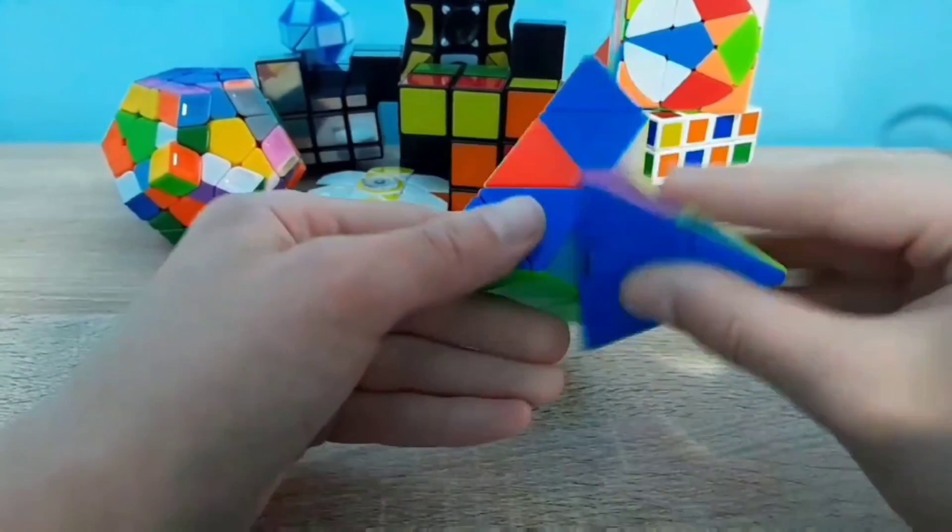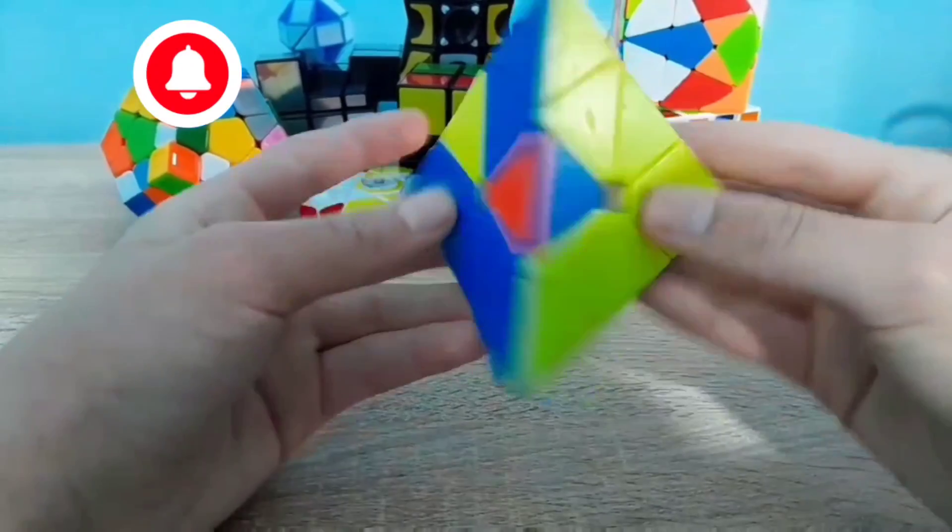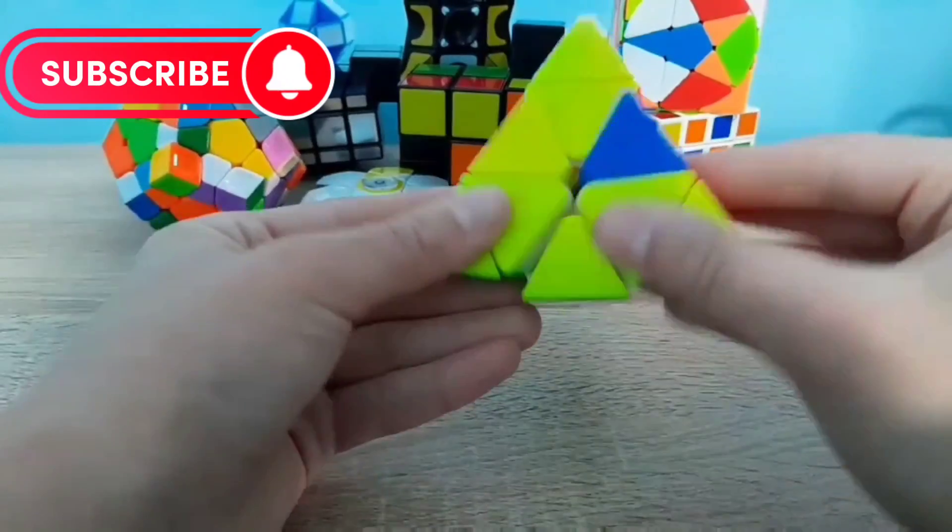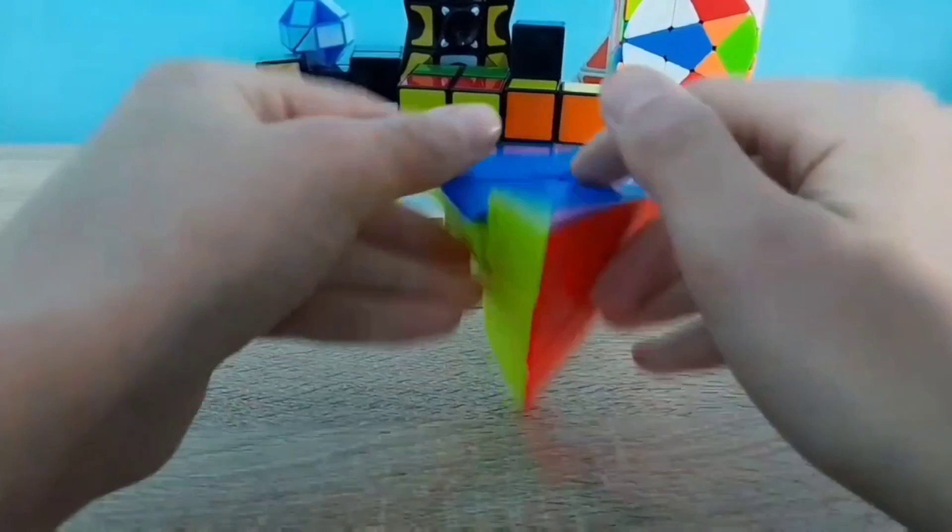And the last is to solve the entire second row. And your cube is solved.